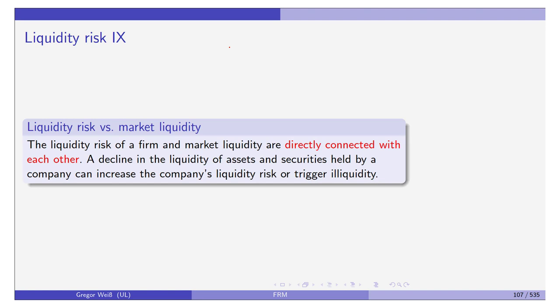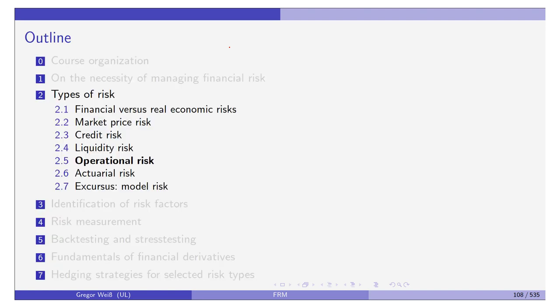The liquidity risk of a firm and market liquidity are directly connected: a decline in the liquidity of assets held by a company increases the company's liquidity risk or could trigger illiquidity. If the market is not liquid, you cannot sell your assets in a short time, and you cannot do a fire sale. We will stop here before we start our discussion of operational risk.